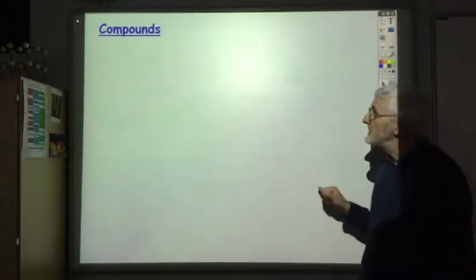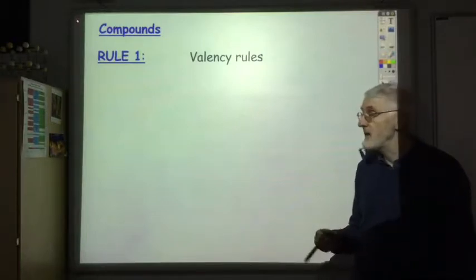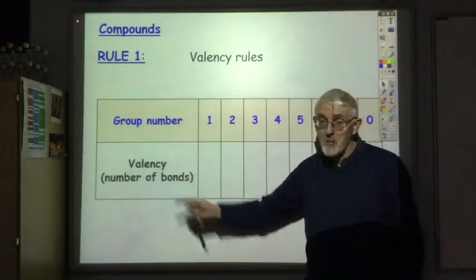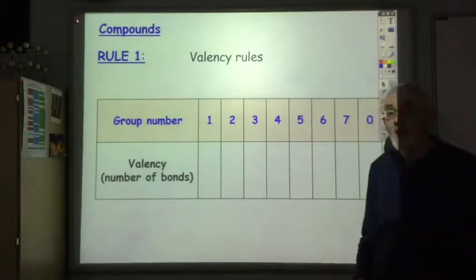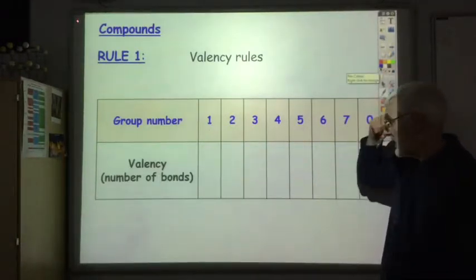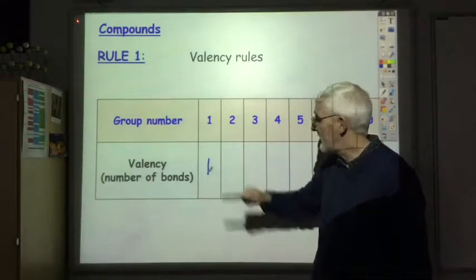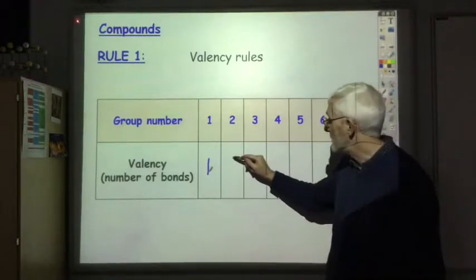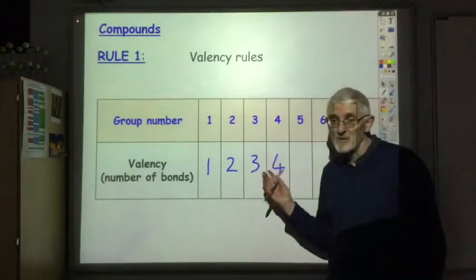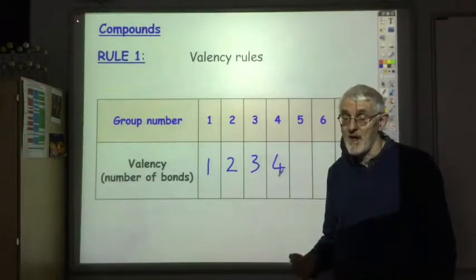Moving on now to compounds, the main way in which you work out the chemical formula of compounds is using valency rules. Valency tells you the number of bonds that an element forms, and it's determined by what group of the periodic table it's in. If your element is in group one it's got a valency of one, group two is two, three is three, four is four — these numbers represent the number of electrons it has to lose in order to have a full outer shell.